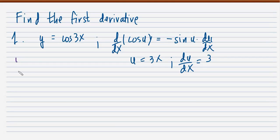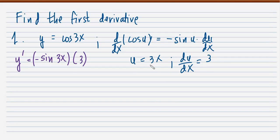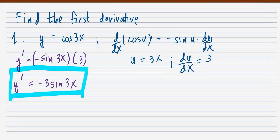Going back to our problem and applying what we solved: the derivative of cosine is negative sine, so we write negative sin(3x) and multiply by the derivative of u, which is 3. The final answer is y' = −3sin(3x). Be careful — some make the mistake of multiplying the 3 into the angle 3x, which is mathematically incorrect.